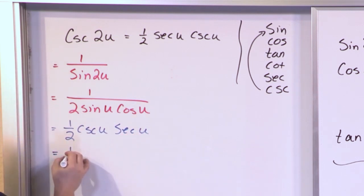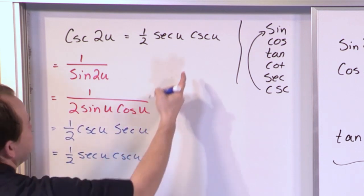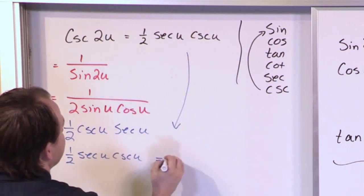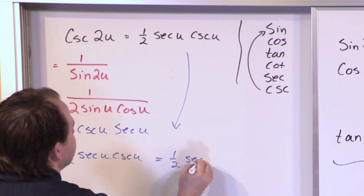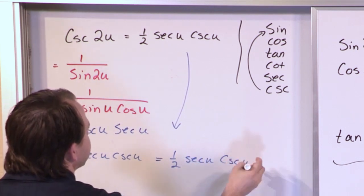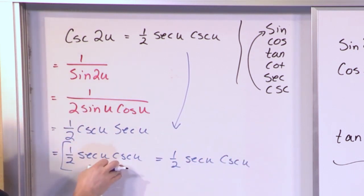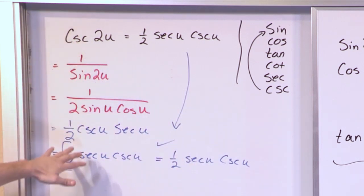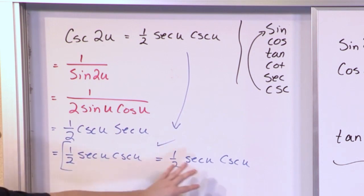And of course this is exactly equal to 1 half secant u, cosecant u, which is exactly what we're trying to reach. The last statement should always be a statement of equality left to right so that your teacher can go and figure out, okay, he knew what he was doing, he or she worked on the left-hand side and made it equal to the right-hand side.